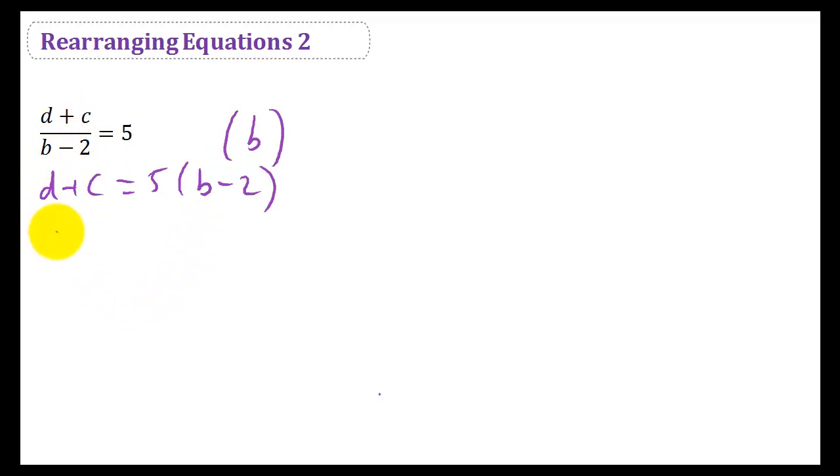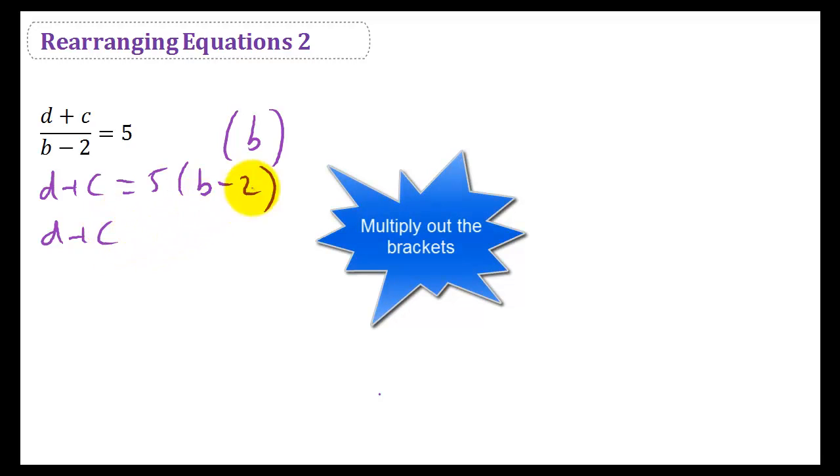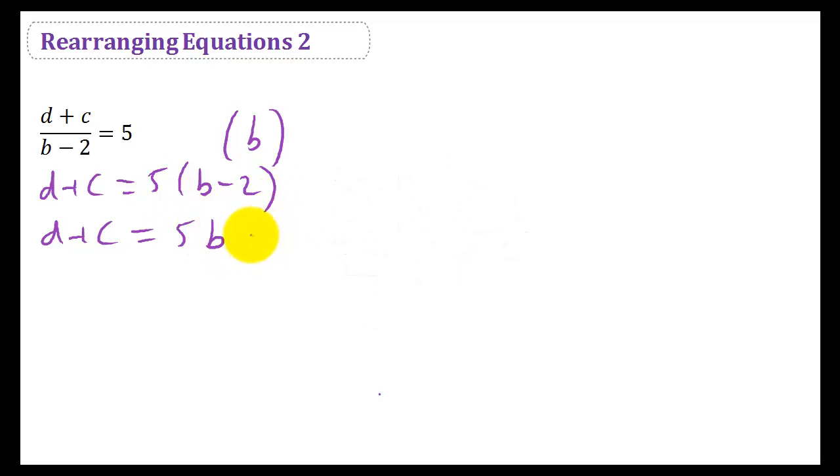Now let's multiply out the brackets, because we essentially want B on its own. We don't want the B with the 2, we want the B on its own. So 5 times B gives you 5B. 5 times minus 2 gives you minus 10.